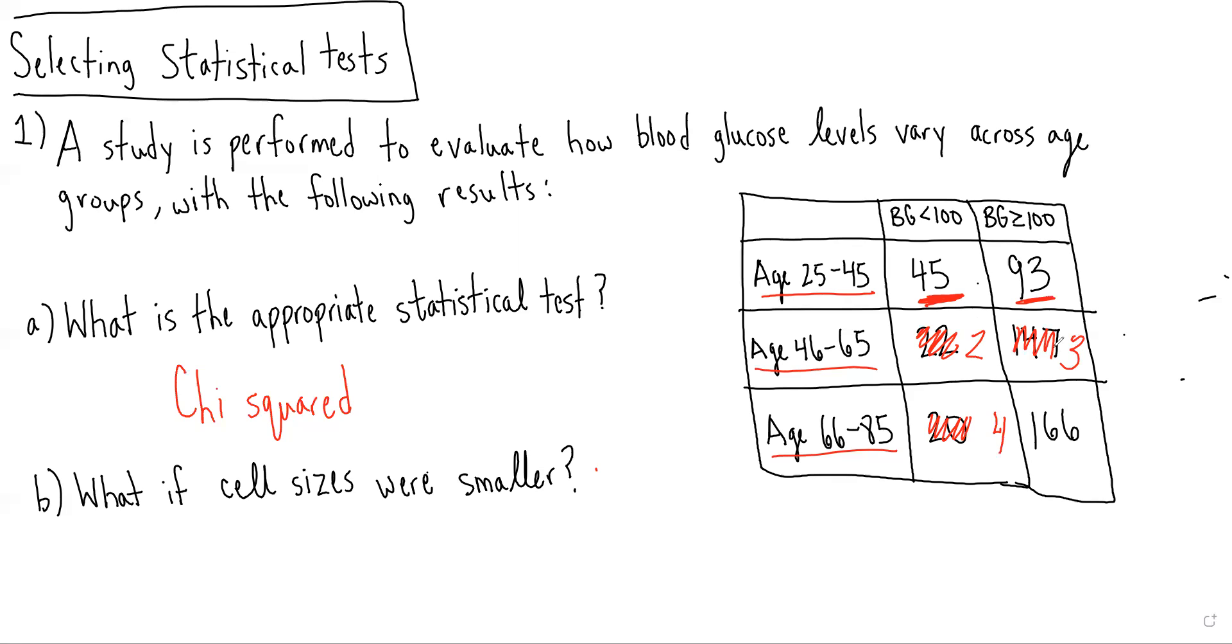We remember that in the situation of categorical data that we're comparing between groups, if the sample sizes are small, formally, if at least 20% of the cells have less than five individuals in them, then we would do a Fisher's exact test.